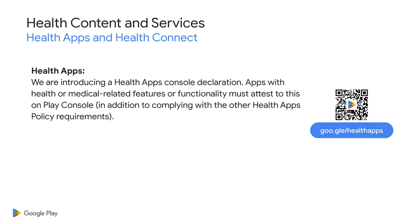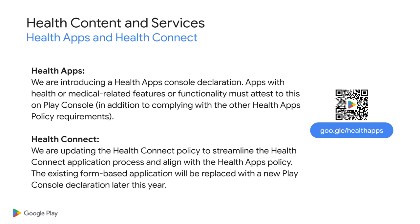Our second update is about our health apps policy. As a follow-up to the previous announcement last October 2023, we have included a console declaration as an additional requirement. In addition to the category selection in Play Console, you must comply with the relevant requirements for your category if your app qualifies for one of the designations outlined in the policy. For HealthConnect, we have updated the policy to align it with the health app's policy, and we are replacing the existing form-based application with a new Play Console declaration. You can read the health app's specific requirements in our Help Center by visiting the link or scanning the QR code.